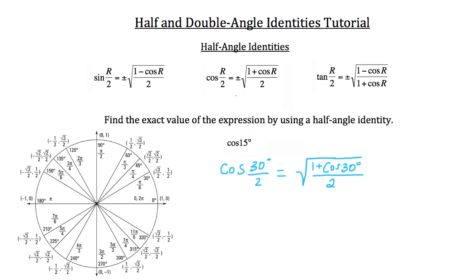Notice this positive or negative here — it refers to whether the angle you're looking for is in a positive or negative region. If you remember your acronym 'All Students Take Calculus': in quadrant 1 all trig functions are positive, in quadrant 2 only sine is positive, in quadrant 3 only tangent is positive, and in quadrant 4 only cosine is positive. Since 15 degrees is in quadrant 1, the result is positive.